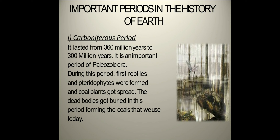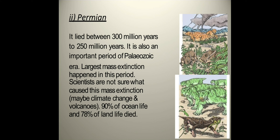Eons were divided into eras, while eras were divided into periods. Let us now discuss the important periods in the history of the Earth. First is the Carboniferous period, which lasted from 360 million years to 300 million years. It is an important period of the Paleozoic era. During this period, the first reptiles and pteridophytes were formed and coal plants spread. The dead bodies got buried in this period, forming the coals we use today. Second is the Permian period, which lasted between 300 million years and 250 million years. The largest mass extinction happened in this period. Scientists are not sure what caused it — perhaps climate change and volcanoes. 90% of ocean life and 78% of land life died in this period.